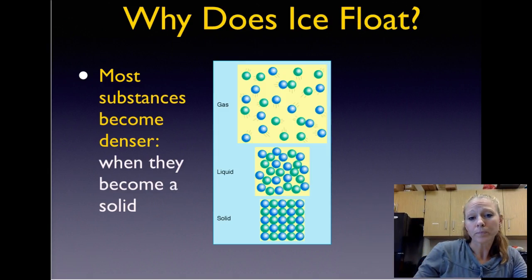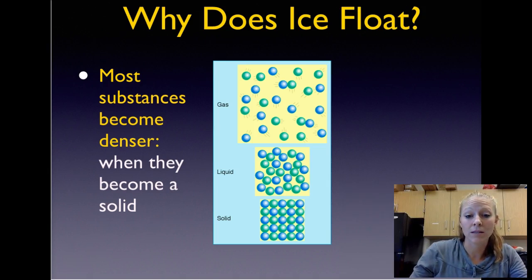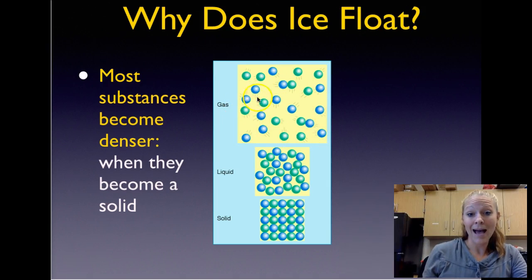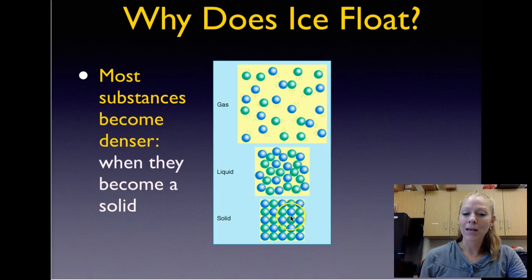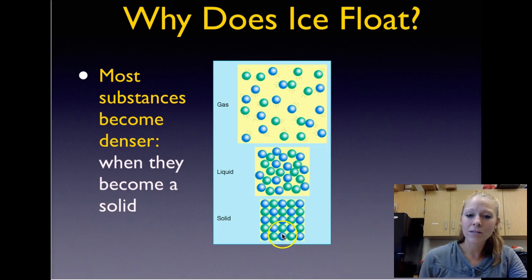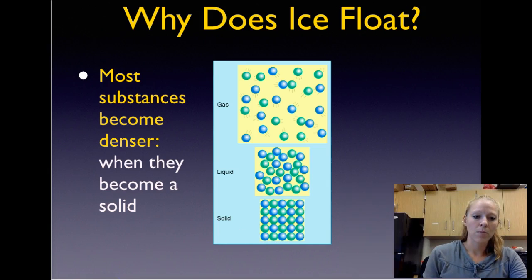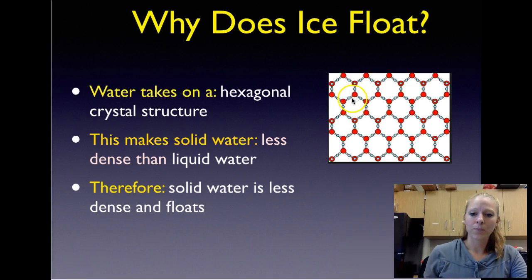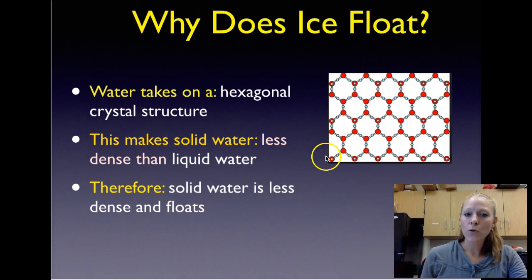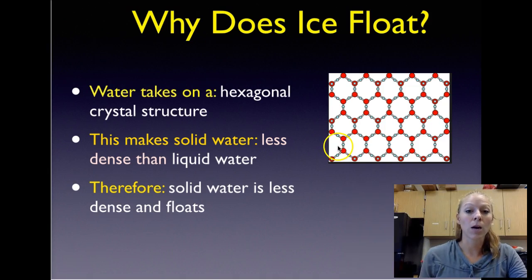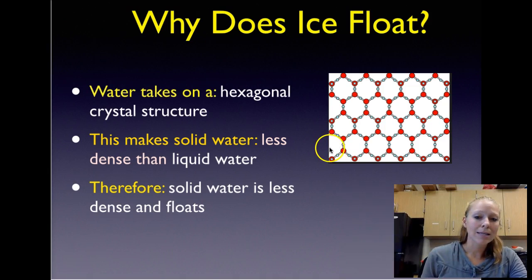Let's talk about ice floating. Most substances become denser when they become a solid, because when a substance is a gas it moves around more and takes up more space, so it's less dense than in a liquid state. As molecules slow down they can be closer to one another, so as a solid it makes sense it would be more dense. However, this is not true for water — it's counterintuitive. Ice is actually a mineral, so it crystallizes and takes on a different shape. Because of its polar nature, water takes on a hexagonal or honeycomb shape. This crystal form makes the water molecules further apart when they're a solid than when they're a liquid. Therefore, because solid water is less dense, it floats on top of liquid water. This is why when you have a glass with ice in it, it tends to stay at the top.